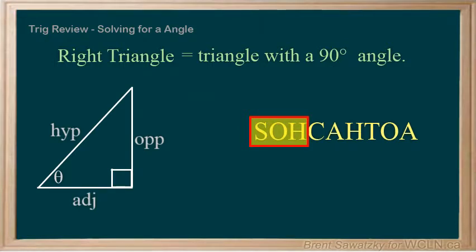Sine equals opposite over hypotenuse. Cosine equals adjacent over hypotenuse. And tan equals opposite over adjacent. Let's take this knowledge and go ahead and solve a couple examples.